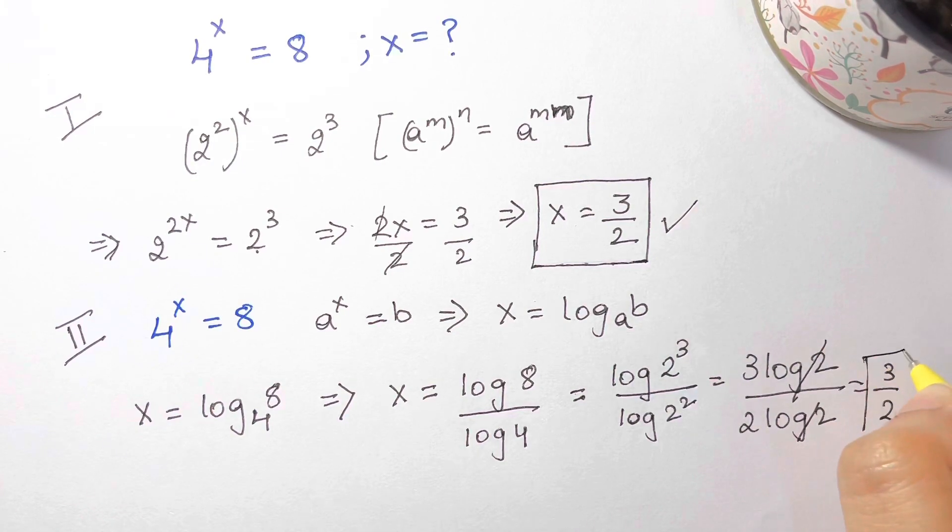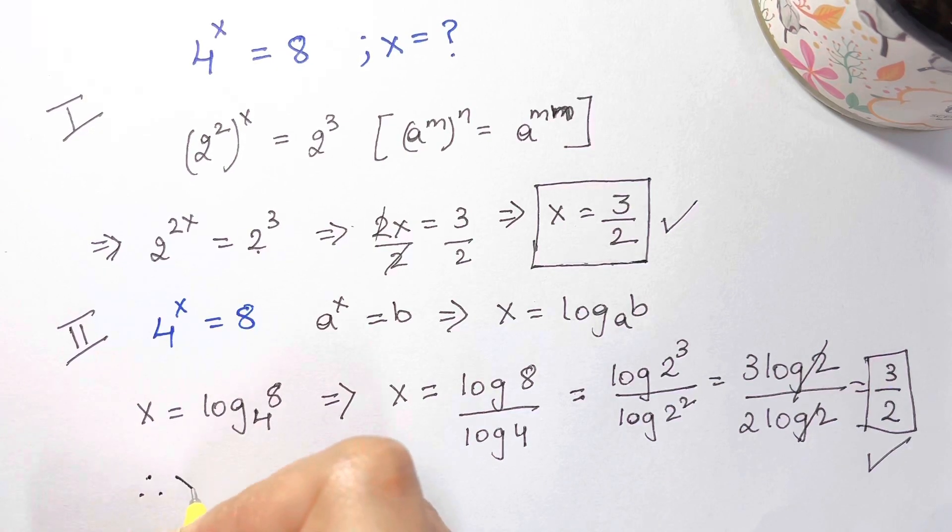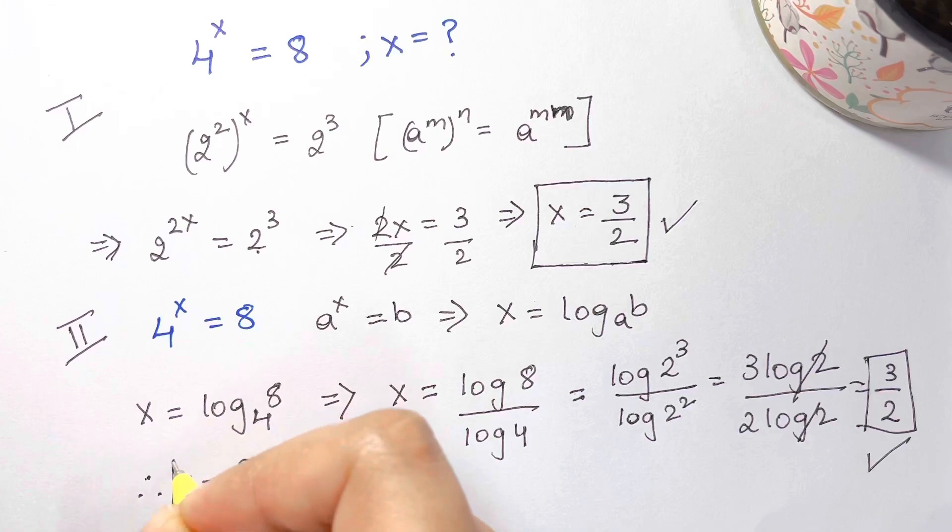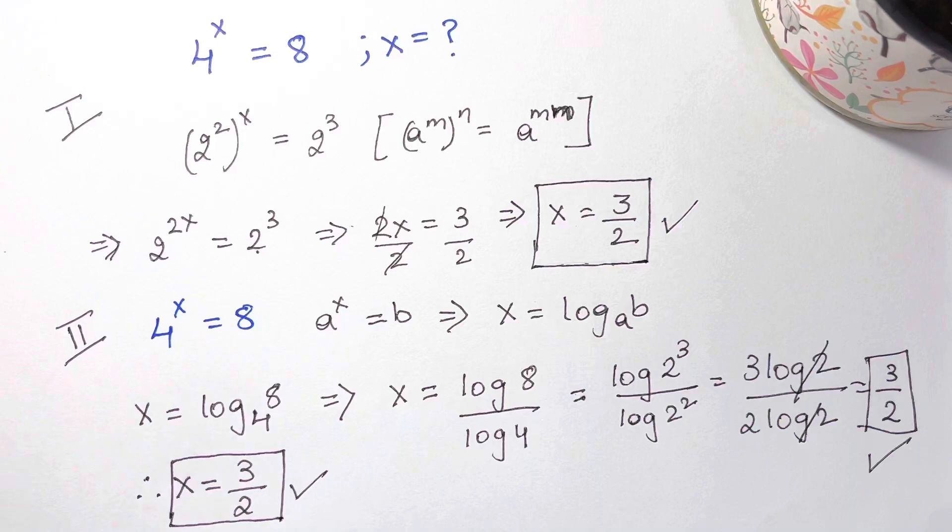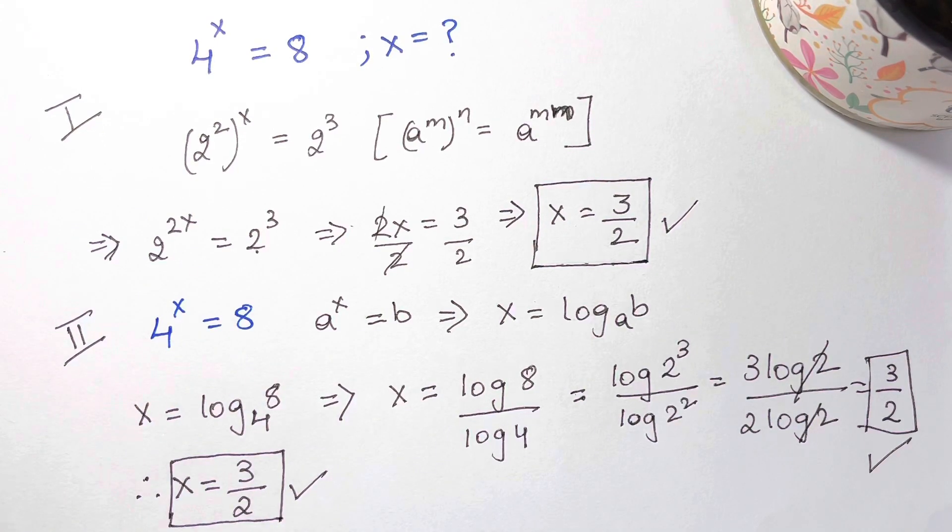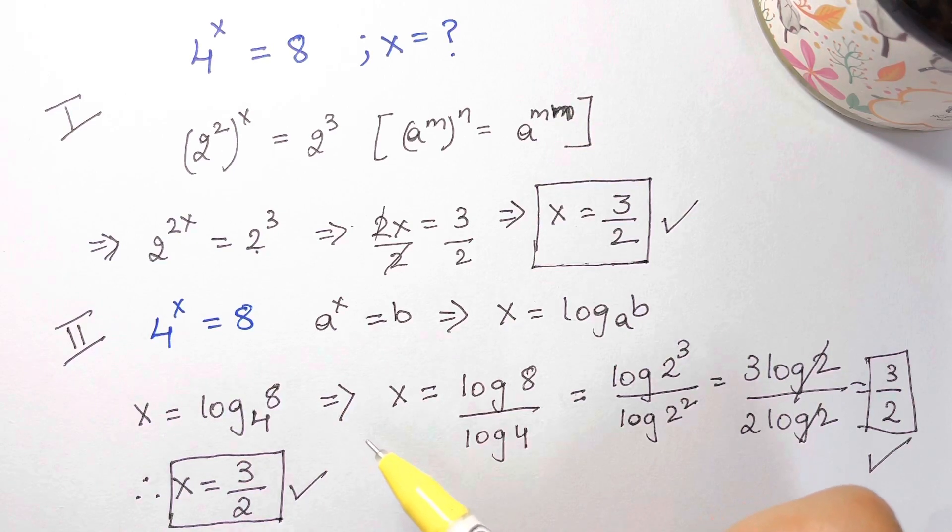So that's how we get the same answer 3 over 2. Therefore x = 3/2. You can use either of the methods - both are very nice methods. One is using exponential laws, another is using logarithms. Thank you so much, bye bye, take care.